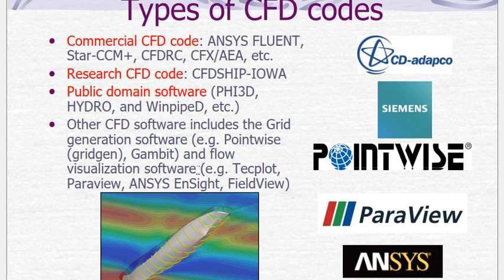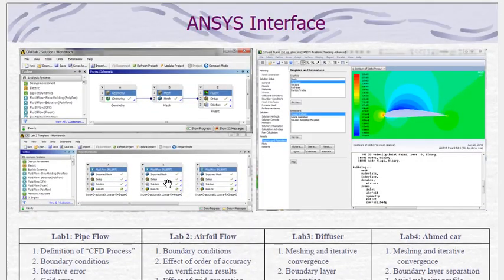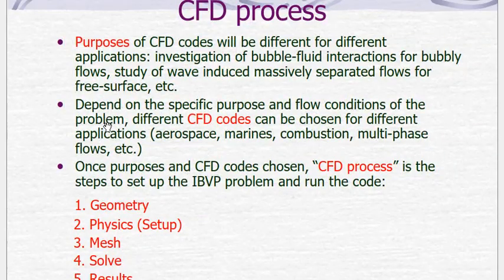There are different types of CFD codes. Commercial CFD codes include ANSYS Fluent and Star-CCM+, while research codes include CFDShip-Iowa. In the ANSYS Fluent software, we first draw our geometry — either directly in ANSYS or imported from CAD software like SolidWorks or CATIA in IGES format — and then perform the analysis.